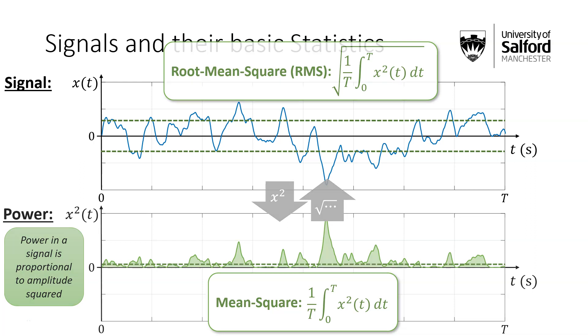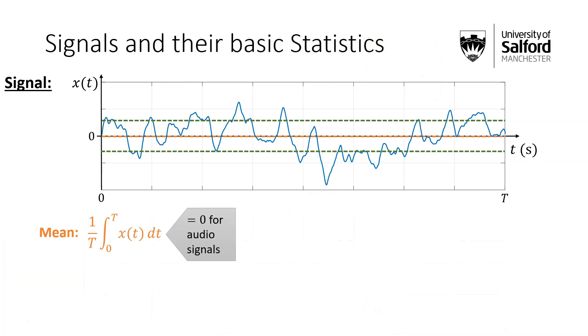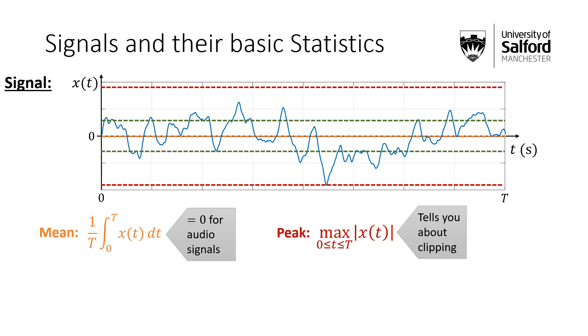So just to summarize, here we have our signal, we might look at the mean, which is always zero for audio signals, but it's just a useful simple formula to look at in terms of understanding the maths. We might look at the peak, which tells you about clipping, or we might look at the root mean squared, which is the most sort of useful in terms of generally telling something about the signal, and that it actually tells you about the signal power.